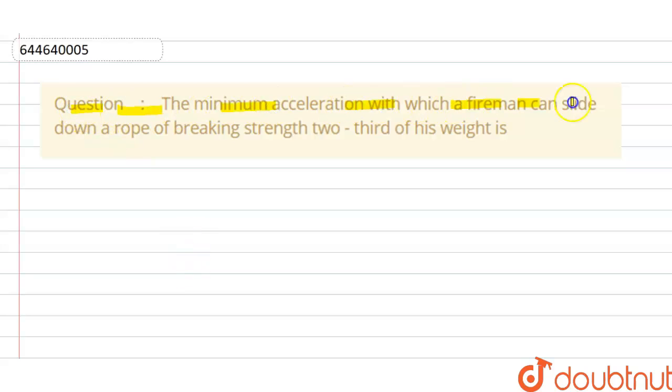the minimum acceleration with which a wireman can slide down a rope of breaking strength two-thirds of his weight is. So the solution of this question is we have the rope here, let us suppose this